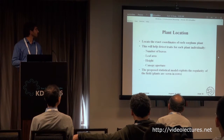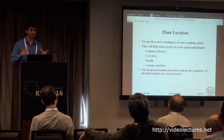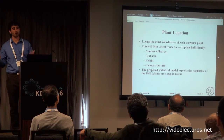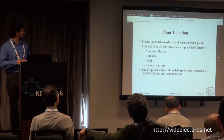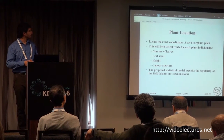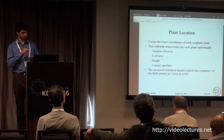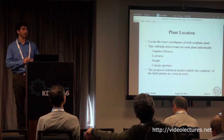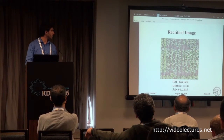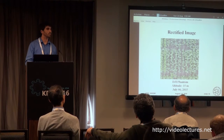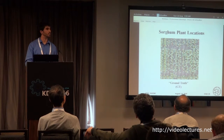The third method that we developed aims to locate the exact coordinates of each sorghum plant. The reason we want this is that we not only want to say we have one million leaves in the whole field — we also want to have particular specific estimates for each plant. So we propose a statistical model that exploits the regularity of the field as the plants are sown in rows. Also, the distance between plants, which is called intra-row spacing, is of particular interest in agronomy. This is an example of a section of the orthorectified image, and from the ground truth positions, you can see that they follow a clear line structure, which we take advantage of.